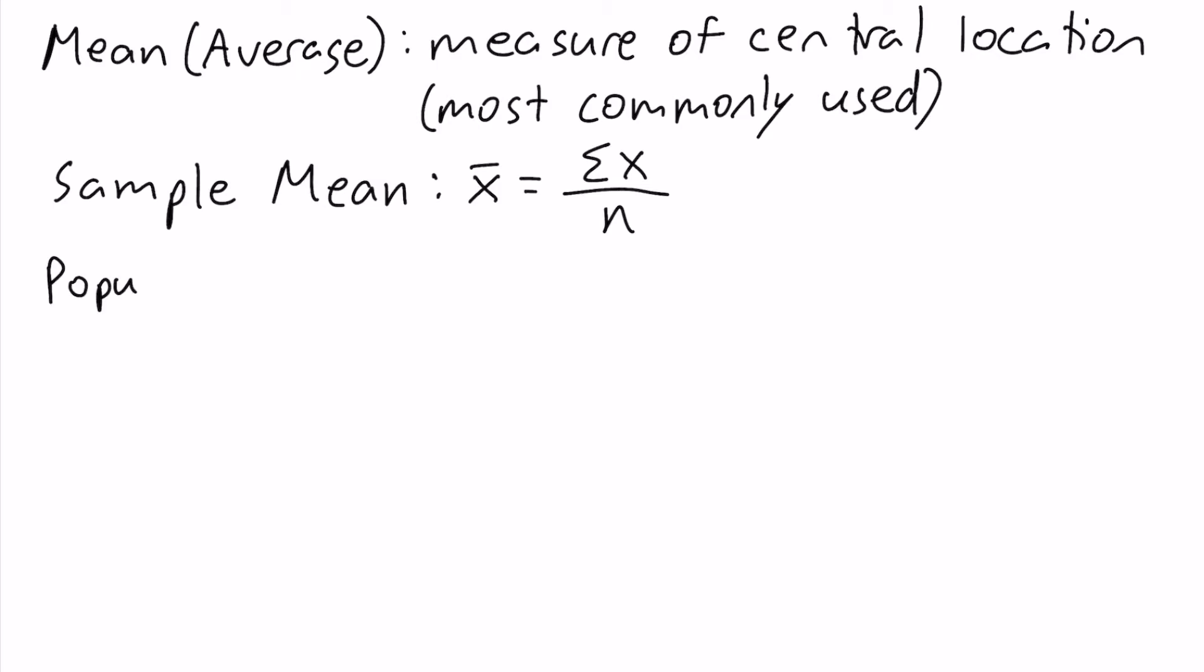If we're working with a population of data, we want to use the population mean, which is written as mu. It's equal to almost the same formula: the sum of the values divided by capital N, the size of the population.